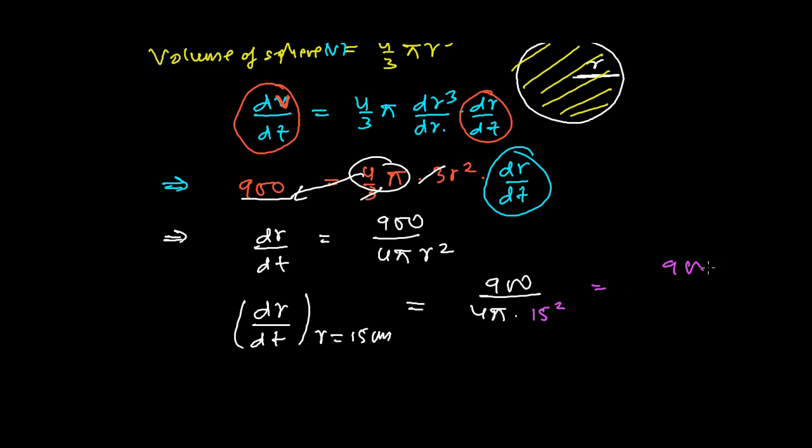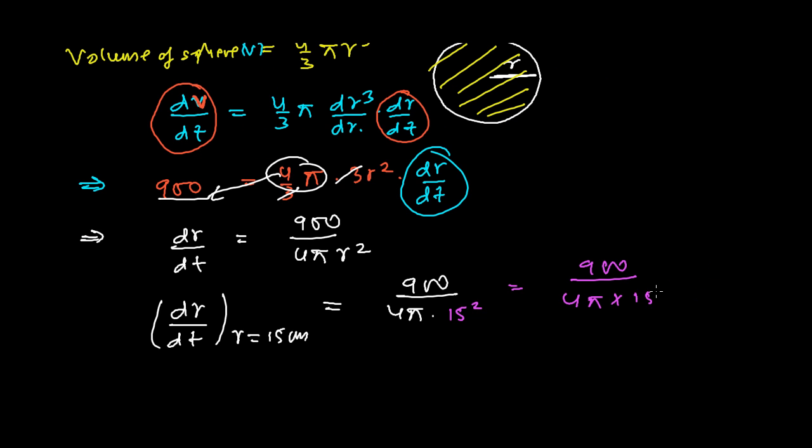That's going to be 900 divided by 4 pi into 15 square, that is 15 into 15. So let's cut up and down. Let me cut this by 5 first, so 5 into 180 is 900, so 180 and 5 threes are 15. And fours, and then 4 and 4 will get 1 over pi.